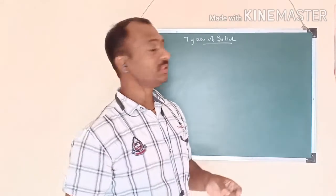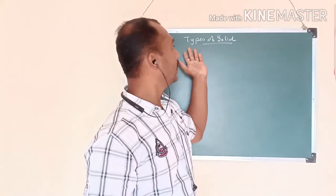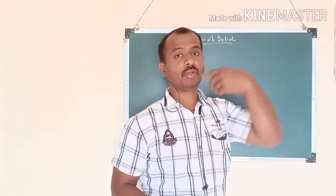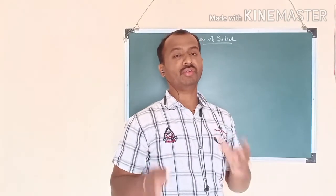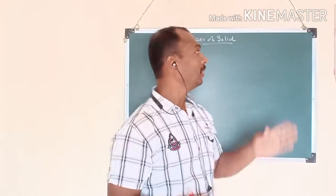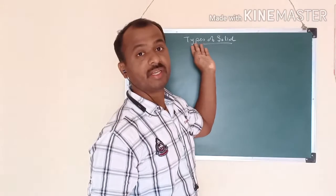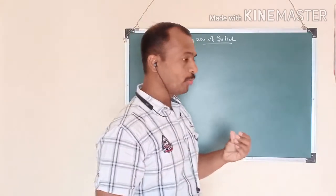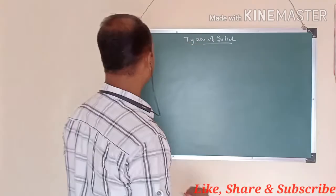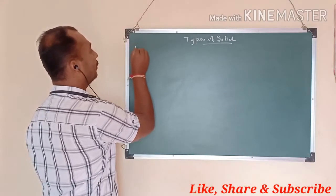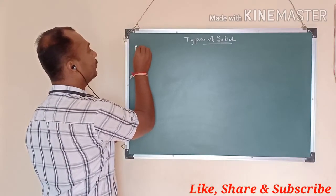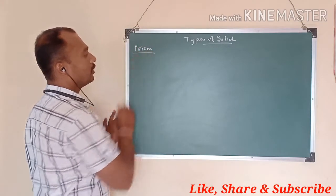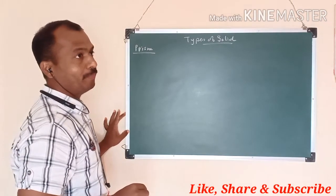In this lecture we will see about the types of solids. Before going to start the production of solids, you need to understand which are the different types of solids. This is called a prism — so what is a prism?